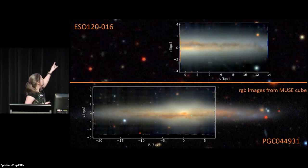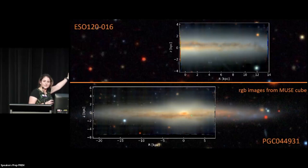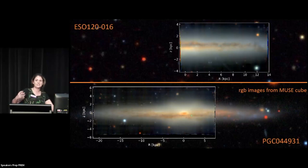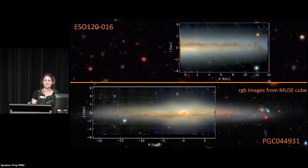Every single one of those pixels is actually a spaxel and has a spectrum associated with it. So that's just an idea of the enormity and beauty of the data we have coming in.